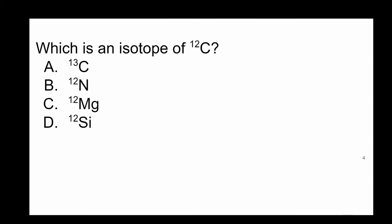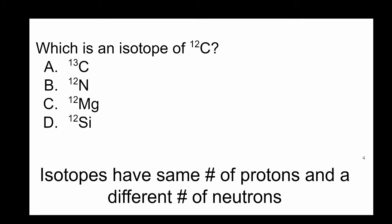Which of the options below is an isotope of carbon-12? The answer here is A, carbon-13 is an isotope of carbon-12. Remember that isotopes have the same number of protons and a different number of neutrons.